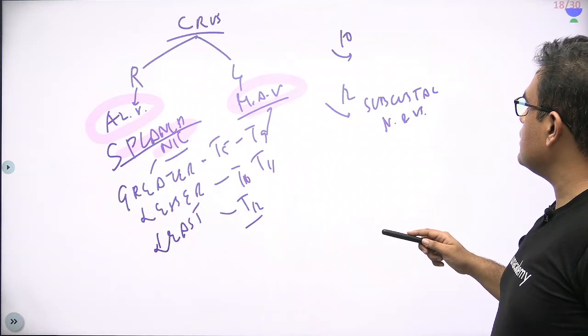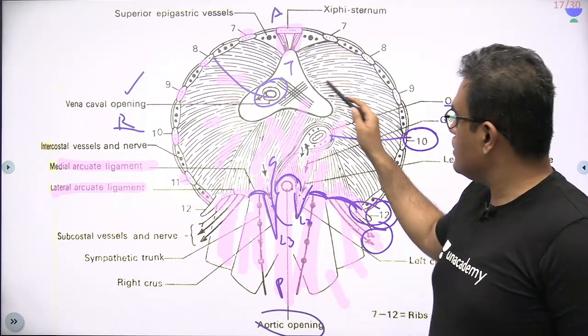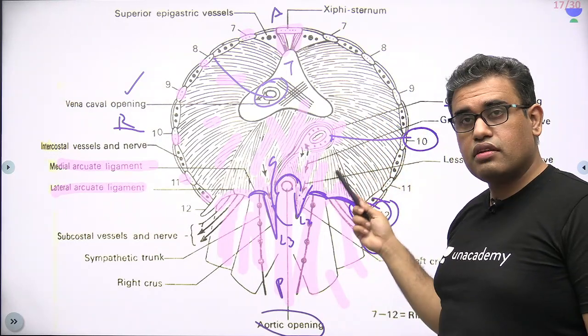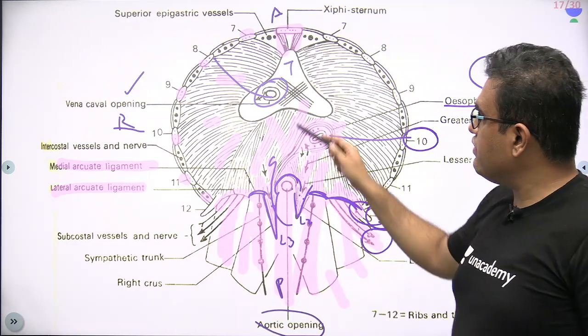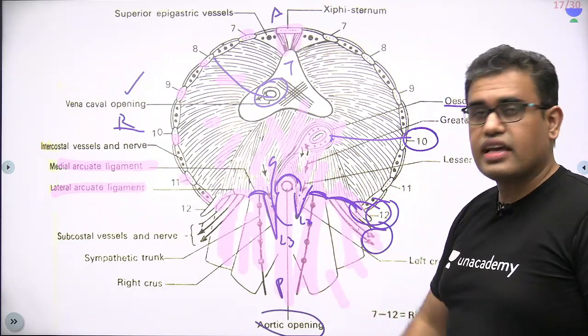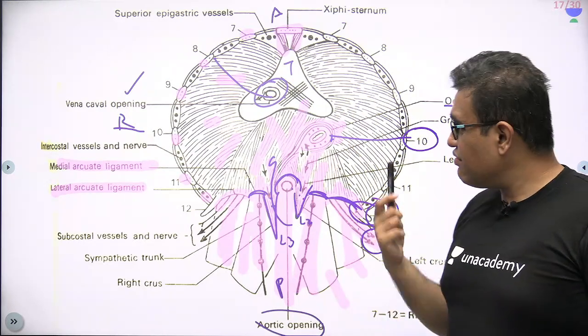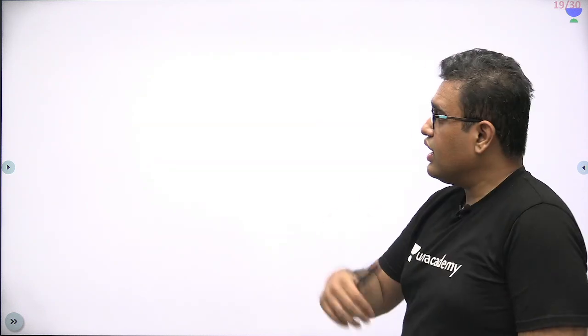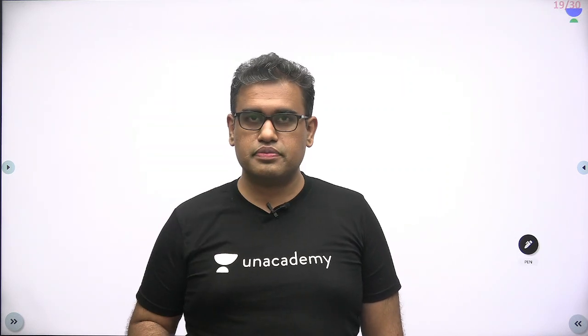To summarize: the esophageal opening is accompanied by the vagus nerve and esophageal branches of the left gastric artery; the IVC opening is accompanied by the right phrenic nerve; and the aortic opening is accompanied by the thoracic duct and possibly the azygos vein. These are the major and minor openings of the diaphragm. Other important topics in this subject include its embryology, congenital hernias, and acquired hernias. Basic anatomy — the shape of the diaphragm, the major openings, what passes through them, and how it is attached — was covered in this session. I hope you enjoyed it. Thank you and all the best.